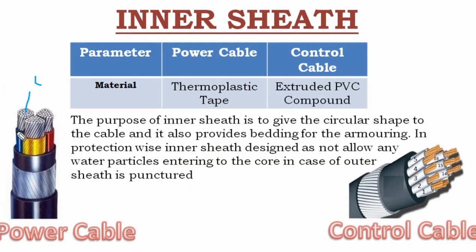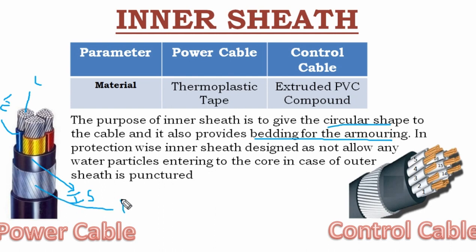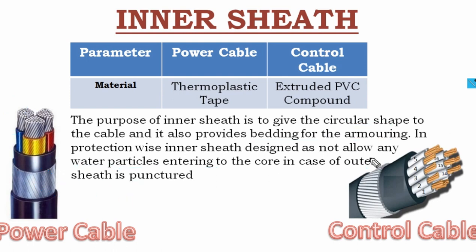Now we will learn about the inner sheath. The purpose of the inner sheath is to give a circular shape to the cable and to provide bedding to the armor. For protection, the inner sheath does not allow water particles to enter the cores in case the outer sheath is punctured. The inner sheath material for the power cable is thermoplastic tape, and for the control cable it is extruded PVC compound.